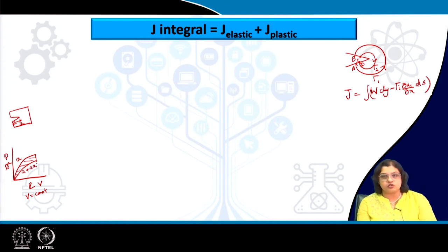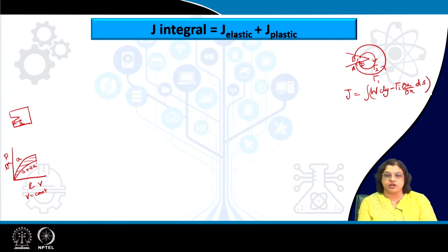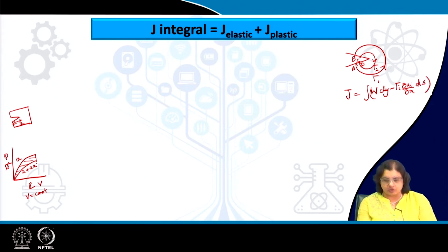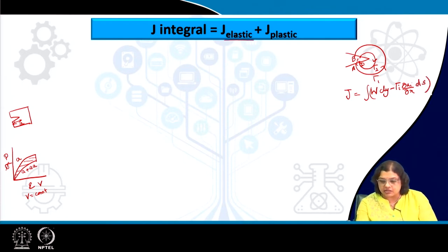The difference in area between the two curves represents the energy required for the crack to grow from A to A plus delta A. This is analogous to G, the strain energy release rate. The J integral also signifies the total amount of pseudo potential energy released per unit growth of crack length, and it consists of two major parts: the elastic part and the plastic component.